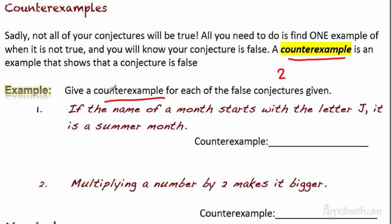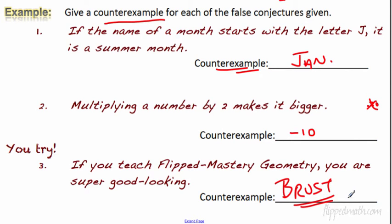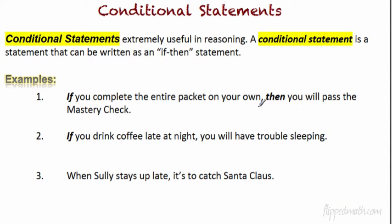Let's give counter examples for false conjectures. First: 'if the name of the month starts with J, it's a summer month.' That's false — January starts with J and isn't a summer month, so January is the counter example. Second: 'multiplying a number by two makes it bigger.' Counter example: negative 10 times 2 equals negative 20, which is smaller, not bigger. The last one is your turn — pause the video. The answer is Brust — easy target.